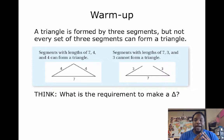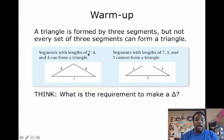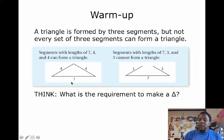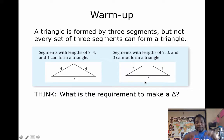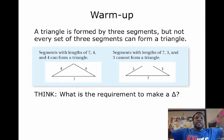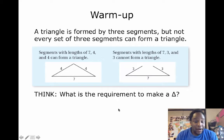So, a triangle is formed by three segments, but not every set of three segments can form a triangle. So, for example, if we had a triangle with segments of four, four, and seven, that works. But if we had a triangle of segments three, three, and seven, it wouldn't work. Because the two three sides aren't long enough to touch each other. Because the seven side is so long. It's kind of like a little T-Rex trying to clap. It's just like, it can't clap. At least that's what we've been told.